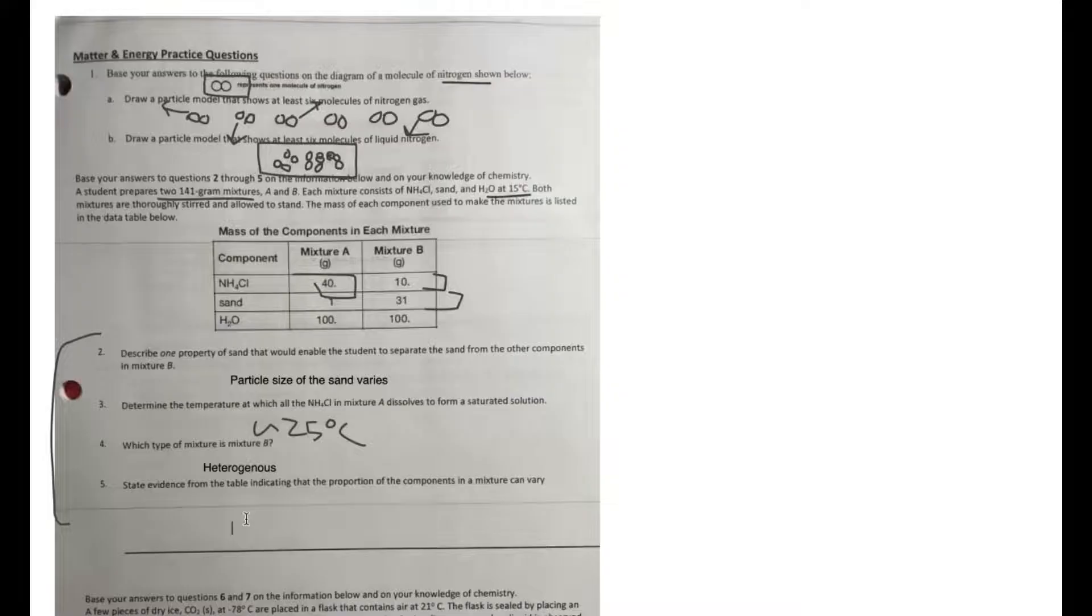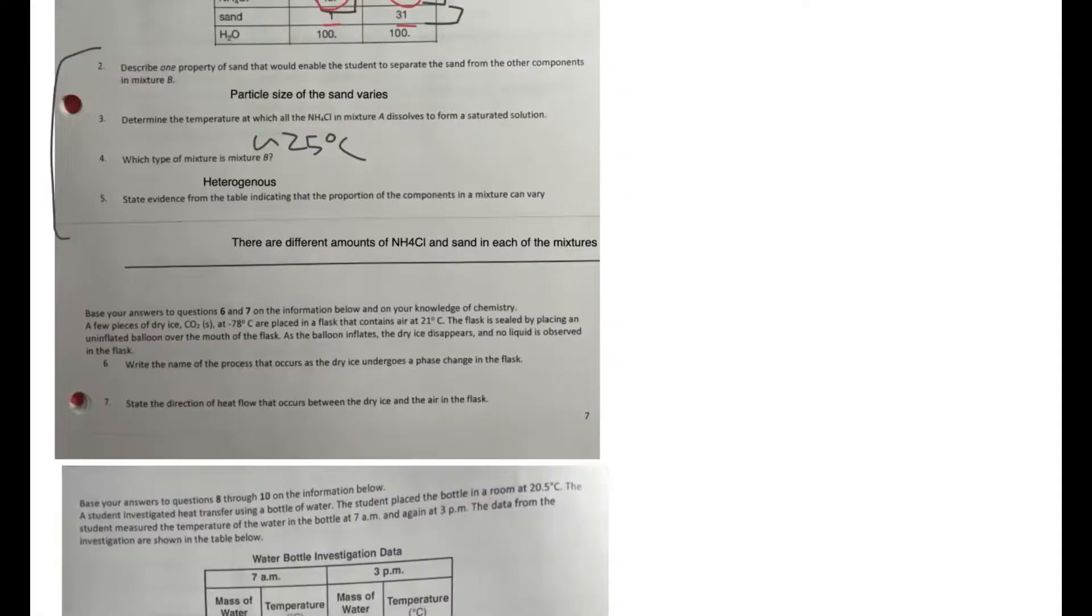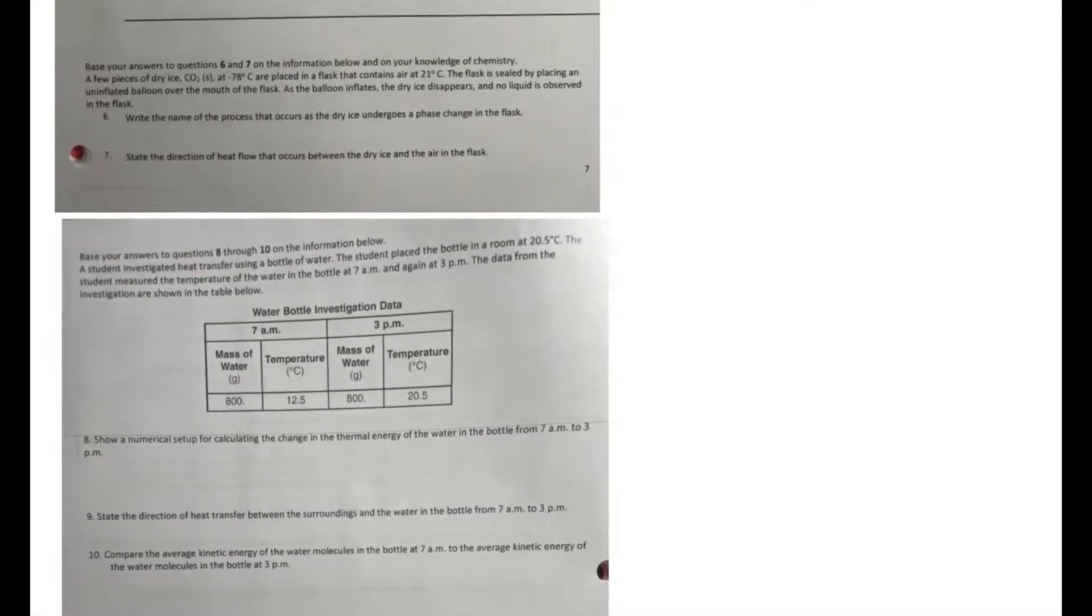Number five says state evidence from the table indicating the proportion of the components in a mixture can vary. That was basically my explanation before, but we can say that there are different amounts of NH4Cl and sand in each of the mixtures. So we can see that in mixture A we have 40 grams of NH4Cl versus mixture B we had 10 grams. And then since they are the same 141 grams in total, the sand is going to have to vary based on that.